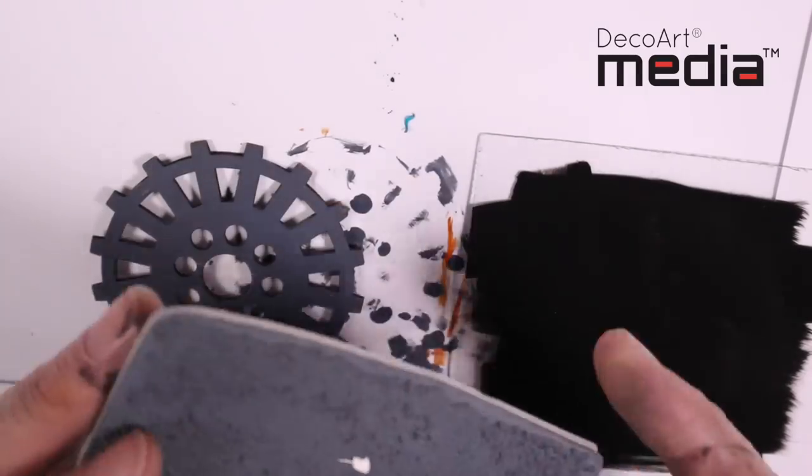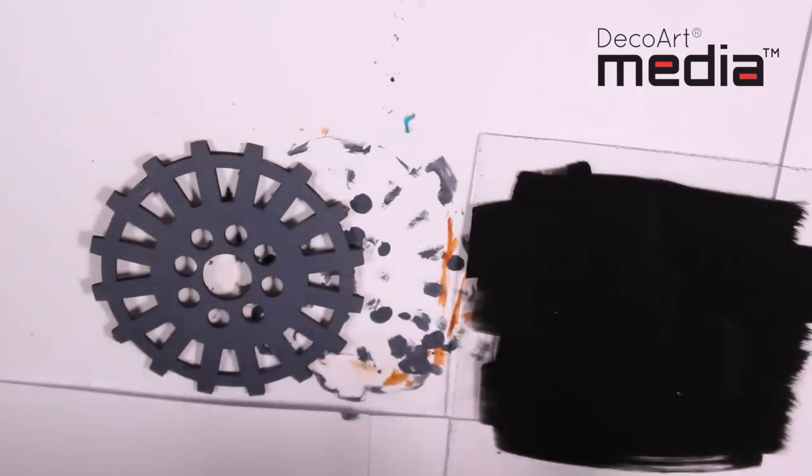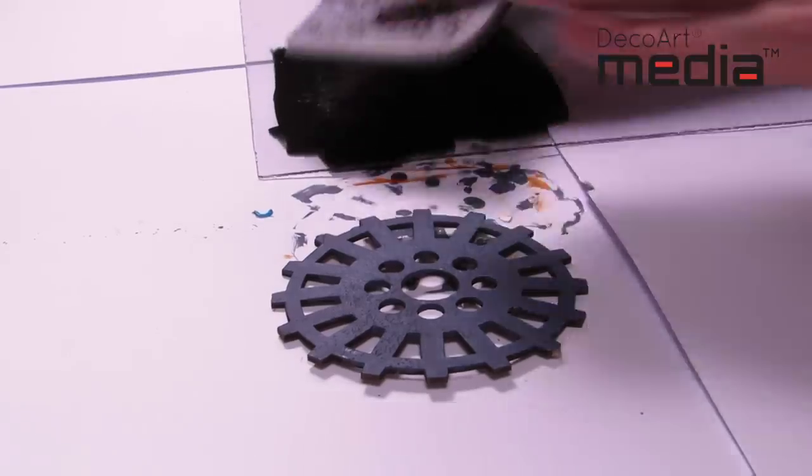This is the Rust Texture stamp in the industrial set. I'm going to pat this into the wet paint and stamp onto the cog. Keep moving it in different directions.